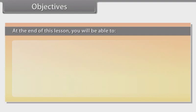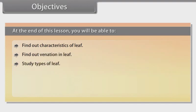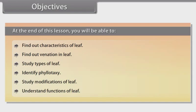Objectives: At the end of this lesson you will be able to find out characteristics of leaf, find out venation in leaf, study types of leaf, identify phyllotaxy, study modifications of leaf, and understand functions of leaf.